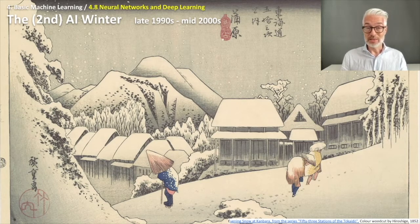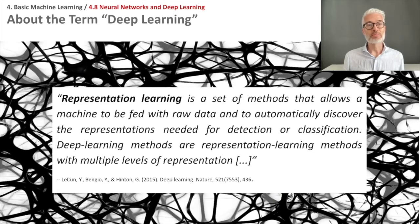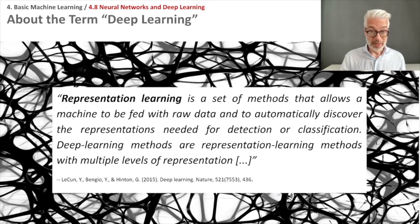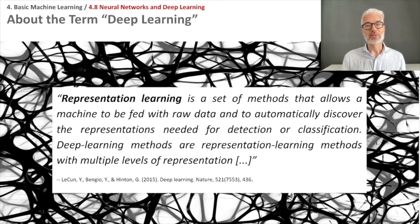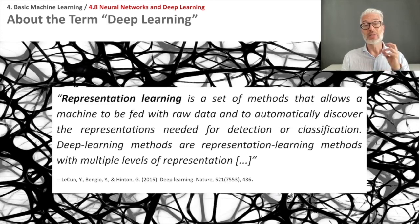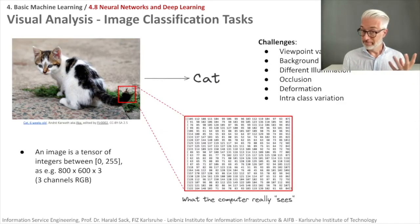What happened next was representation learning, deep learning, and convolutional neural networks. Representation learning is a set of methods that allows a machine to be fed raw data — not specific features but raw data — and to automatically discover the representations needed for detection or classification. So we learn the features. Deep learning methods are representation learning methods with multiple levels of representations.